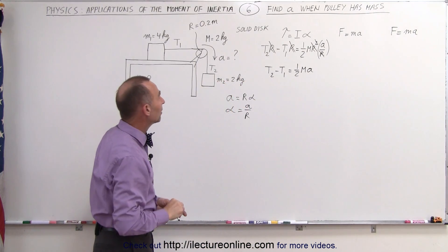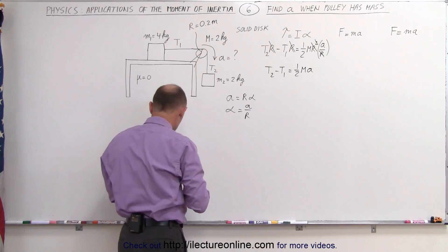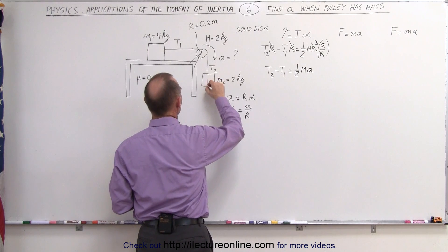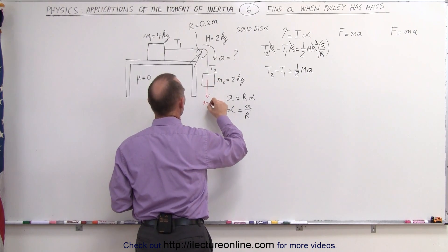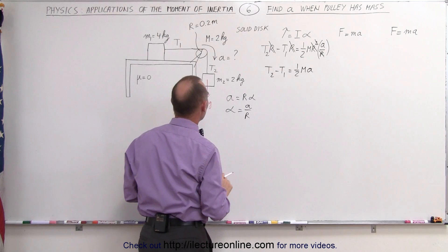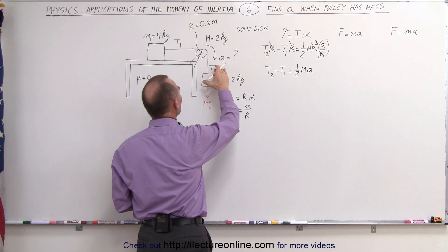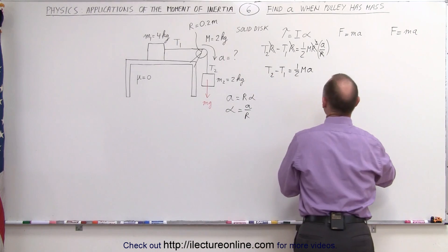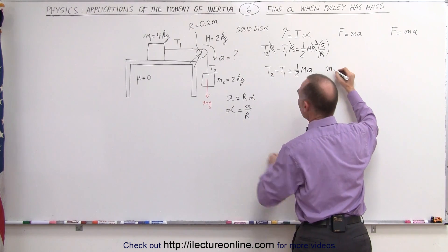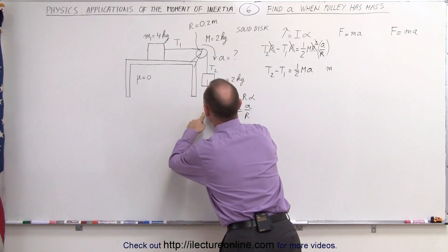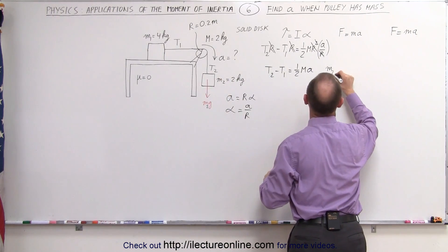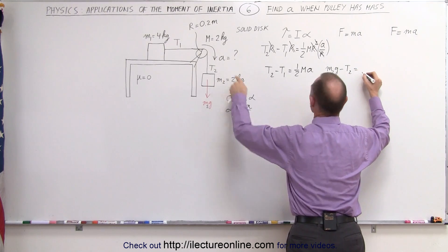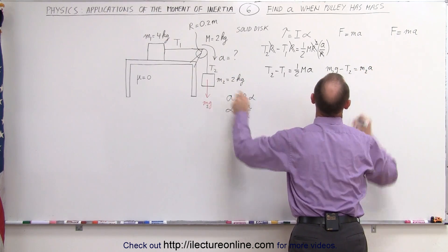Now let's do F equals MA relative to this block right here. Notice that the force of gravity will cause the block to be pulled down with a force equal to mg, and of course the force opposing the acceleration will be T2. So the second equation then becomes all the forces aiding the acceleration, M2g minus T2 equals this block M2 times acceleration.